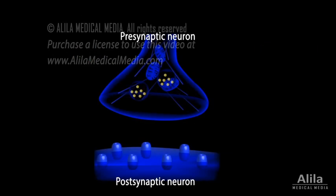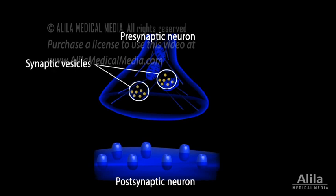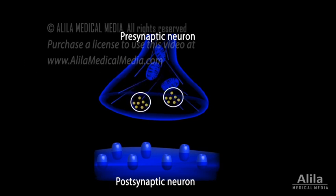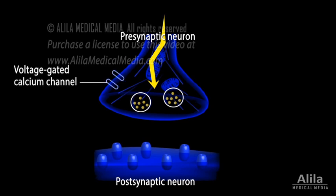Neurotransmitters are synthesized in the presynaptic neuron and stored in small sacs called synaptic vesicles at the axon terminal. Some of these vesicles are docked on the plasma membrane, ready to release neurotransmitter on demand. When an action potential arrives at the nerve terminal, the resulting depolarization opens voltage-gated calcium channels, allowing calcium to flow in. Calcium causes the vesicles to fuse with the plasma membrane, releasing the neurotransmitter in a process known as exocytosis.